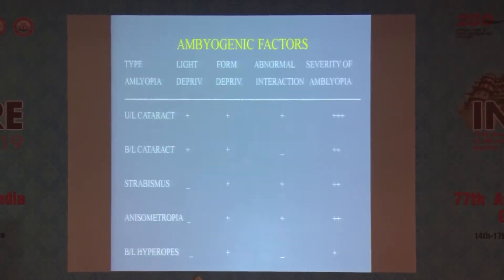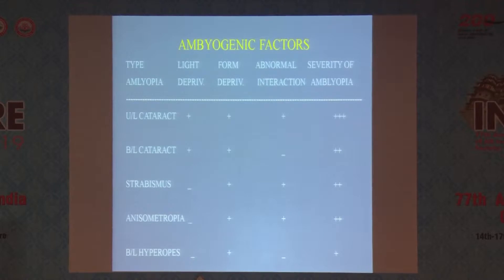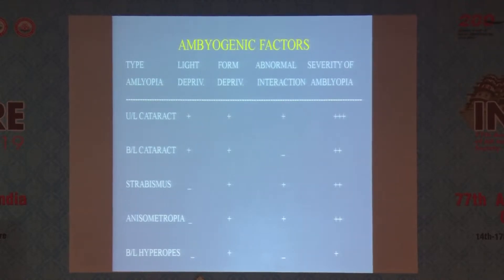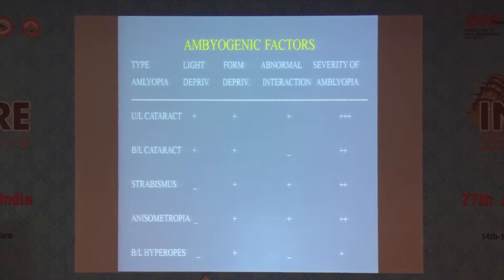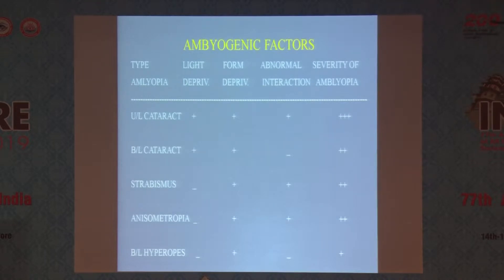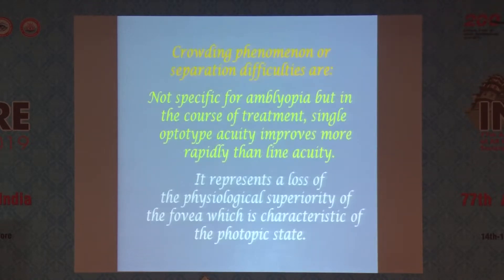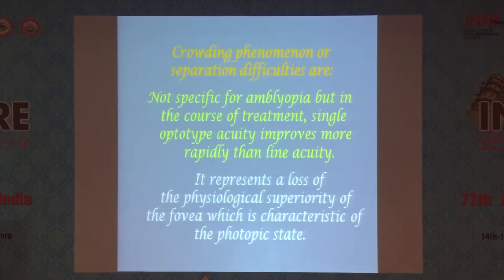In the other types, occlusion therapy is the main treatment. In unilateral cataract, there is denser amblyopia because all three amblyogenic factors — light deprivation, form deprivation, and abnormal binocular interaction — are present. So it is difficult to treat.